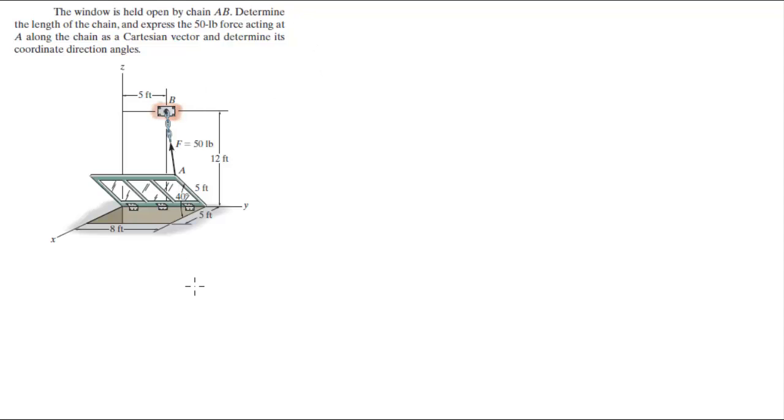First, what you need to find is the position vectors. The position for A: A_x, A_y, and A_z. Now let's see, A_x is equal to 5 cosine of 40 degrees because you know that the length of the window from here to here is 5.